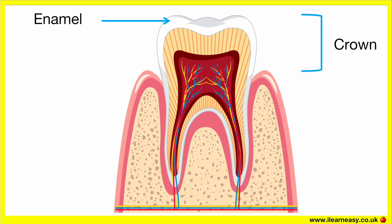Enamel. The enamel is the hardest substance in the human body. It covers the crown. The enamel protects the tooth from damage caused by chewing, hot and cold foods, and acidic substances. It also prevents tooth decay.